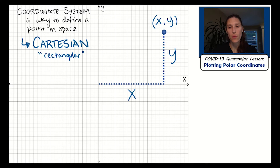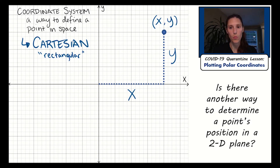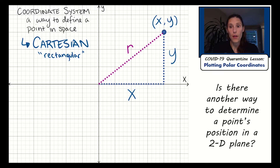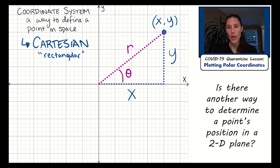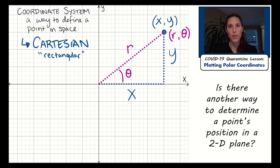The question is: is there another way we can define a point on a plane with two pieces of information? Yes, there is. We can use the distance from the origin and the angle from the positive X axis. Those two pieces of information — R and theta — can also land you on that exact same point. When we use R and theta, we're using the polar coordinate system.